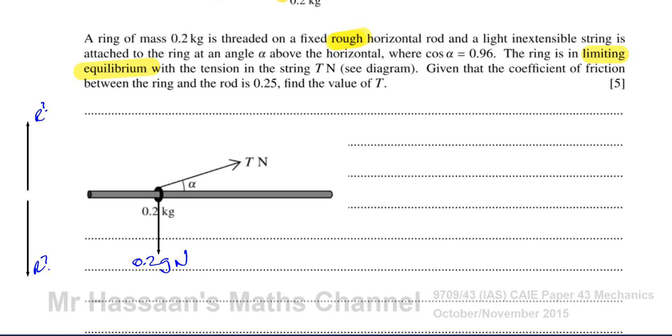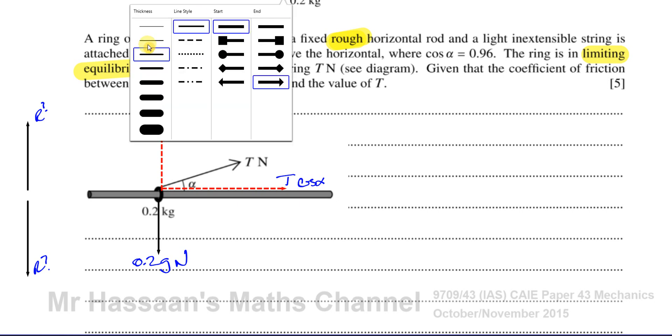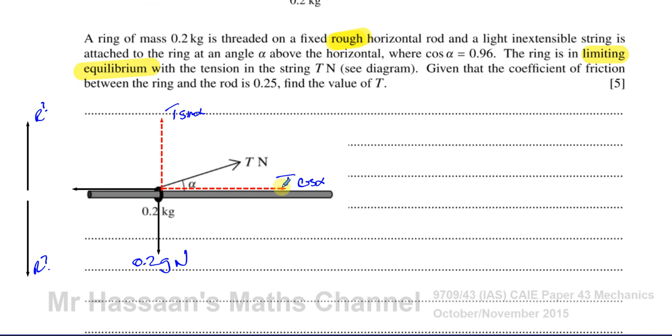Then we have the component of the tension acting in the direction parallel to the rod and also perpendicular to the rod. The component parallel to the rod is going to be T times cosine alpha, and perpendicular to the rod is T times sine alpha. You can think of this as the adjacent side of this little triangle here, and this is like the opposite side. You're going to have friction acting, which will act in a direction opposing the motion that would take place. The ring would move this way, so you have friction and it's reached its maximum possible value because it's in limiting equilibrium. The maximum possible value of friction is equal to mu times r. We know mu is 0.25, so that's 0.25 times r.